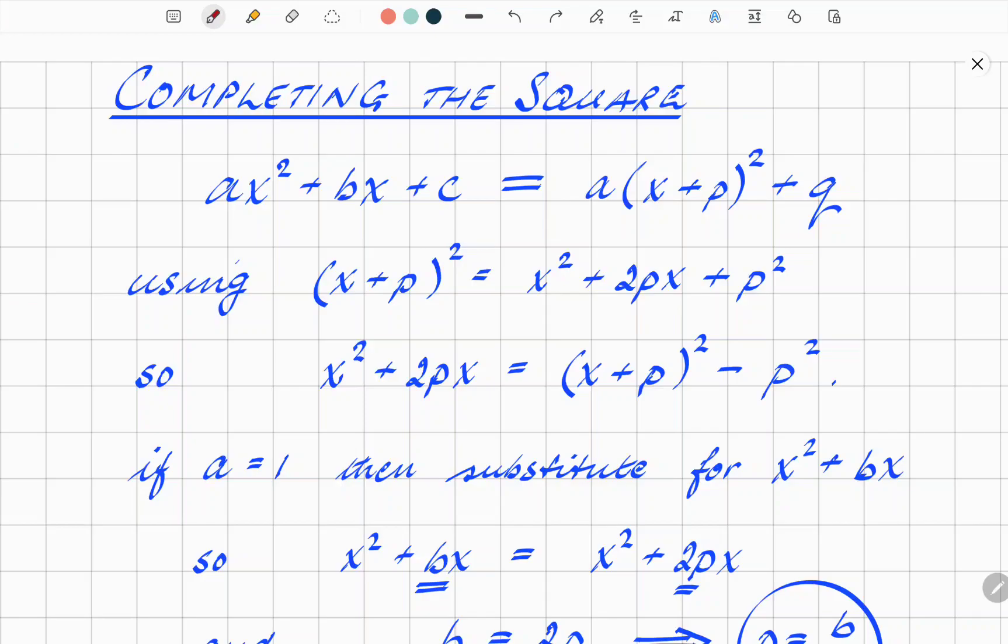So completing the square, how do we go about it? We start with a standard quadratic, ax² + bx + c, which is the general form. We want to rewrite it in a form where you've got a binomial term, (x + p)², and then adjusted to give you the original quadratic back again.